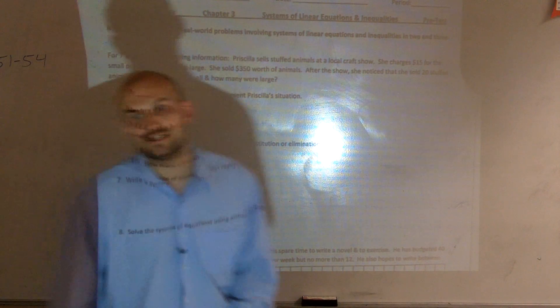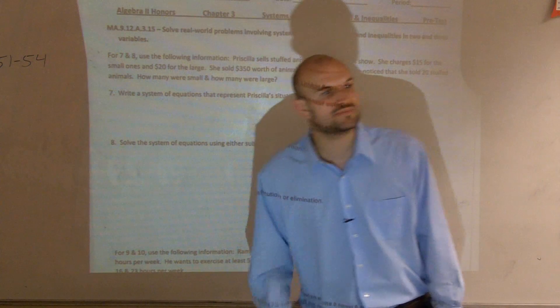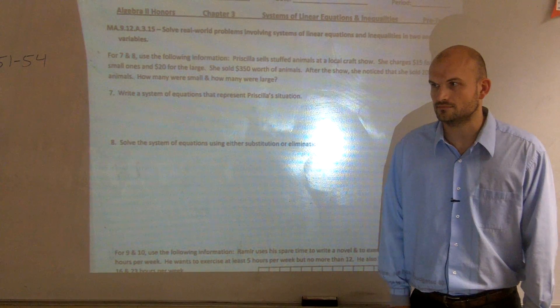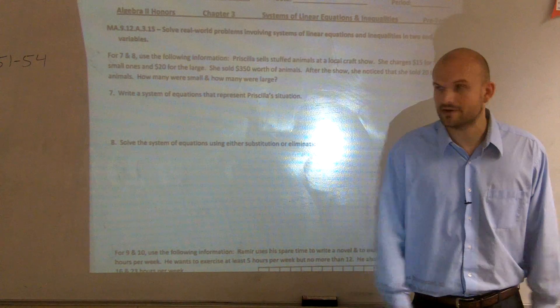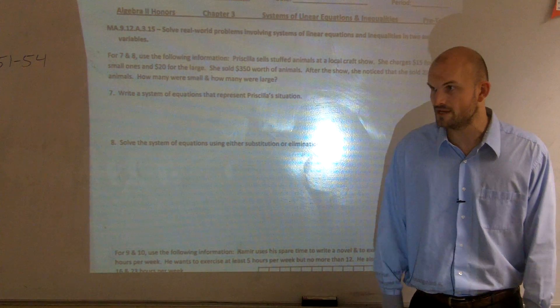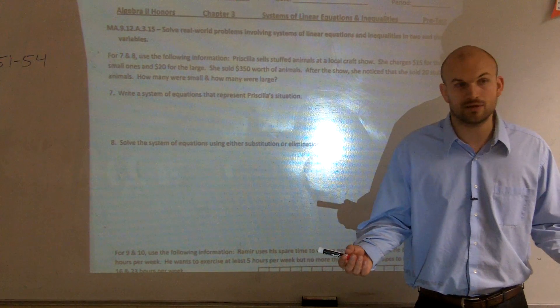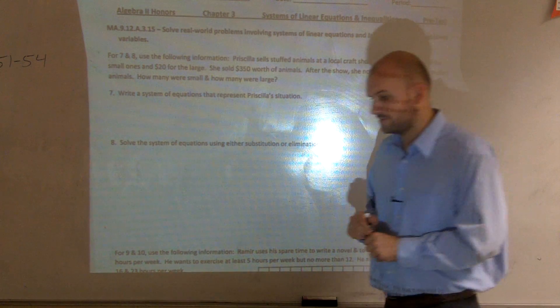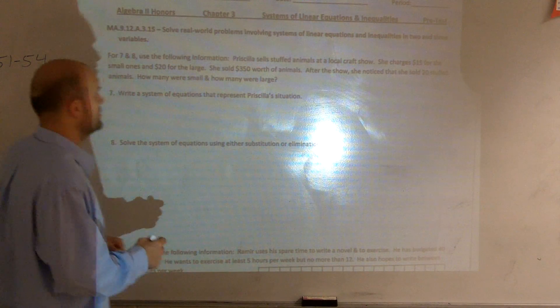Now, usually the question that you need to solve comes at the end of the problem. So, what is it in this problem that we're trying to figure out? We're trying to figure out how many small animals were sold and how many large animals were sold. Do we know what either one of those are?